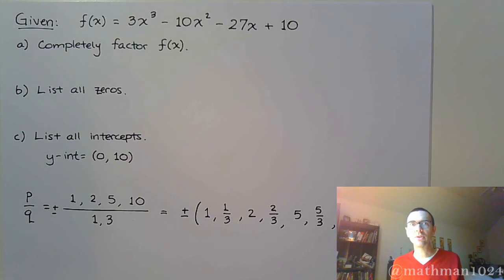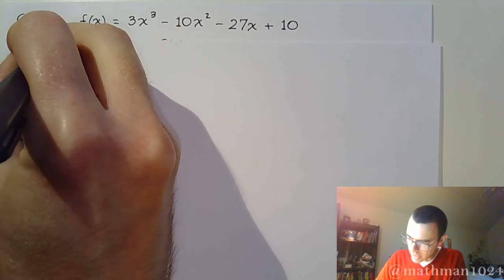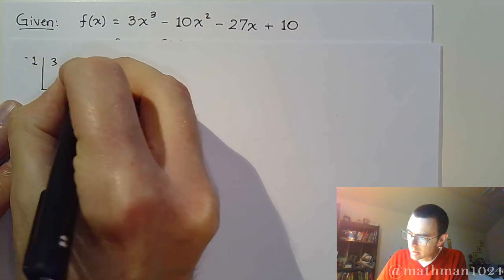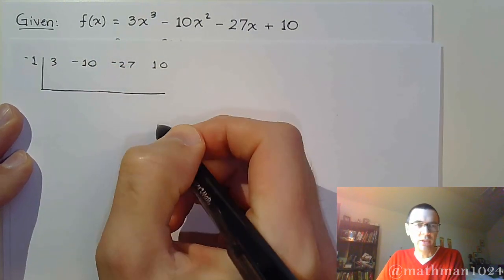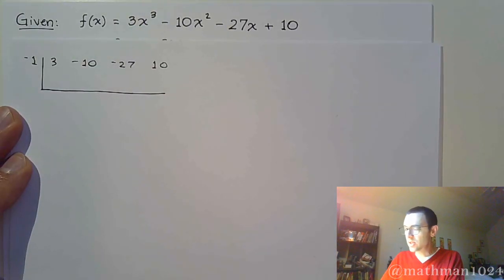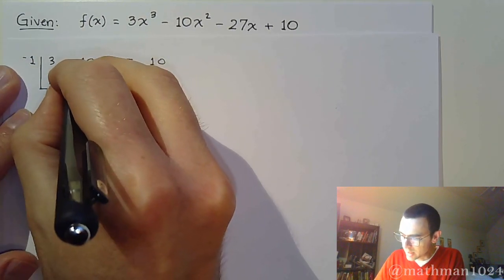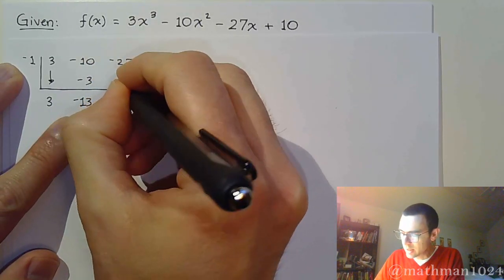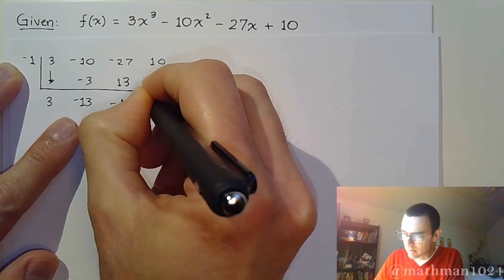Let's try synthetic division with negative 1, using coefficients 3, -10, -27, and 10. Bringing down: 3, multiply gives -3, add gives -13, multiply gives 13, add gives -14. The remainder is not zero, so negative 1 doesn't work.